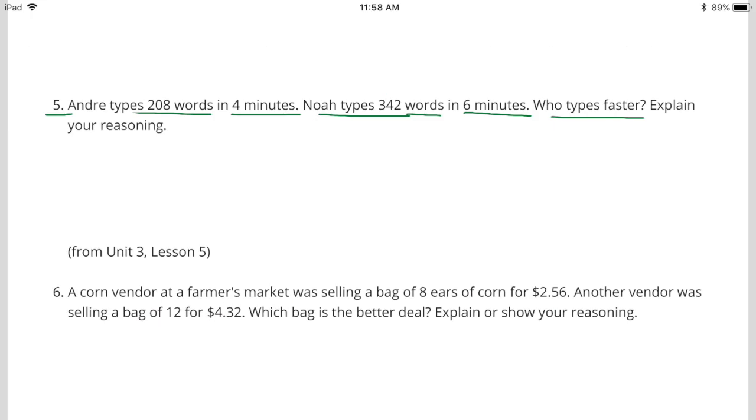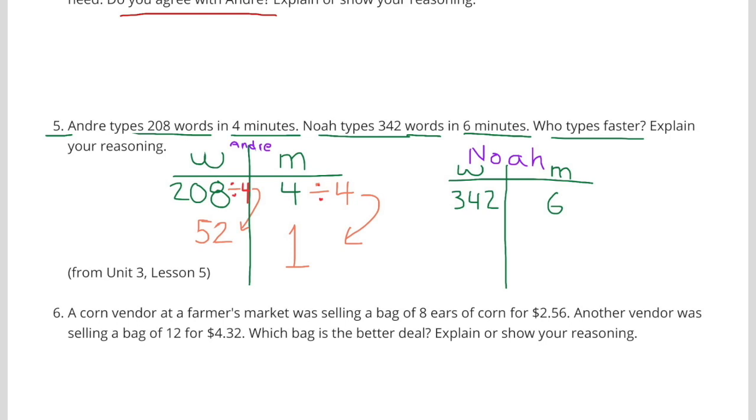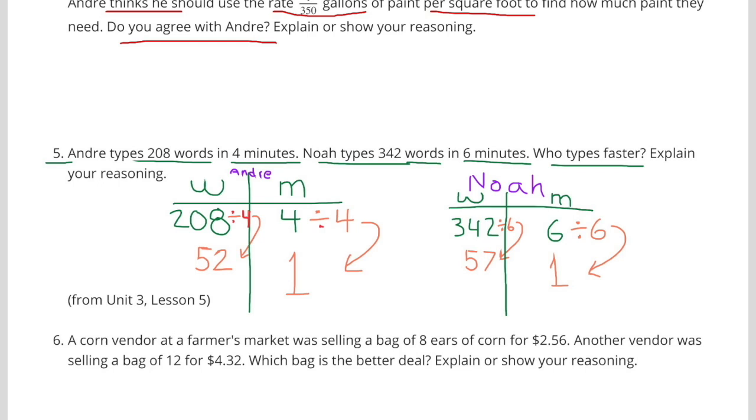Number 5. Andre types 208 words in 4 minutes. Noah types 342 words in 6 minutes. Who types faster? Explain your reasoning. On Andre's chart, I wrote for the number of words, 208, and the number of minutes were 4. On Noah's chart, the number of words are 342, and the number of minutes are 6. Divide 4 by 4 on Andre's chart, and divide 208 by 4 to figure out how many words he types per minute. Andre types 52 words in 1 minute. On Noah's chart, divide 6 by 6 to get 1 minute, and divide 342 words by 6 to get 57 words. Noah types 57 words per minute. Andre types 52 words per minute. So Noah types more words per minute than Andre.